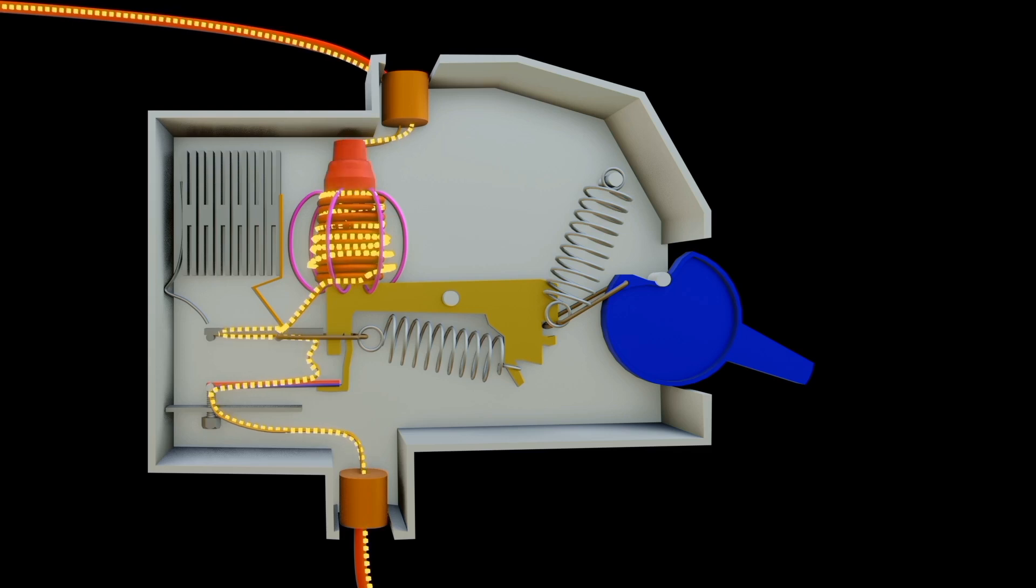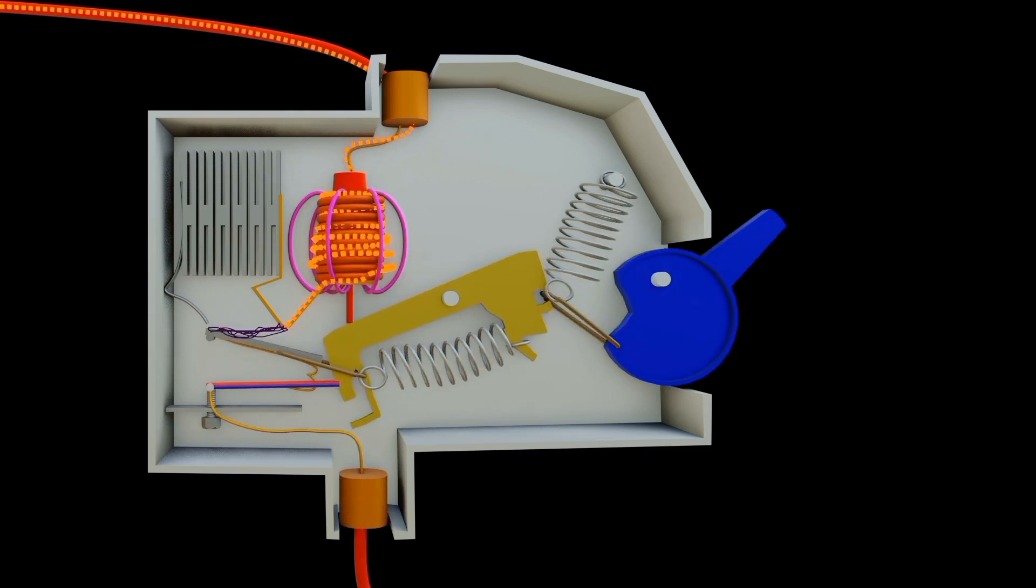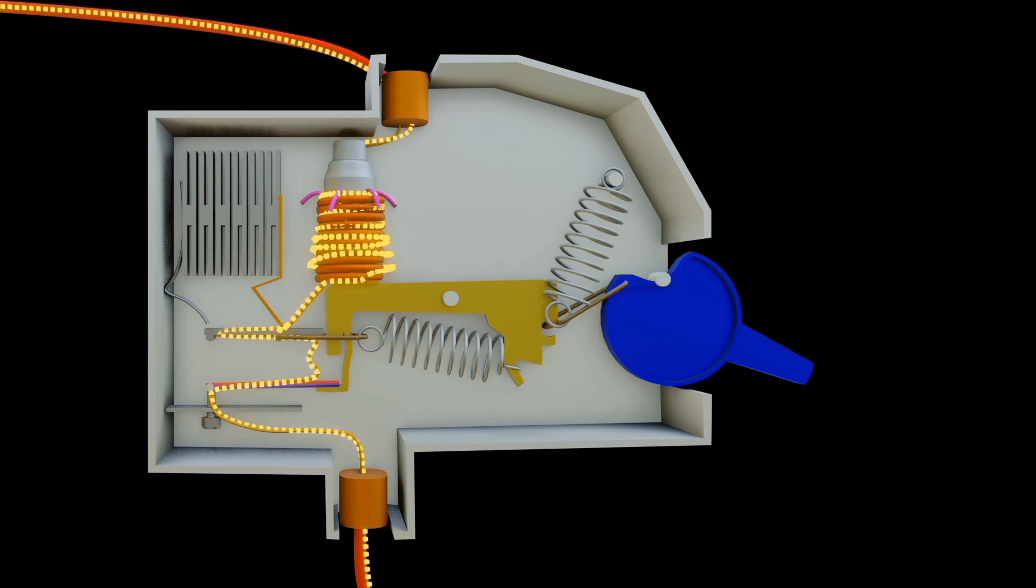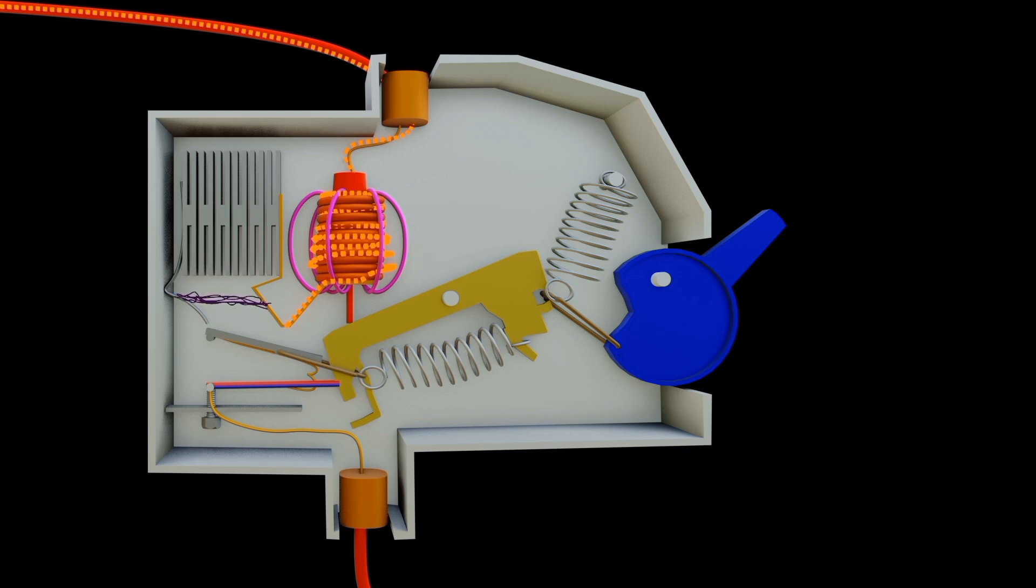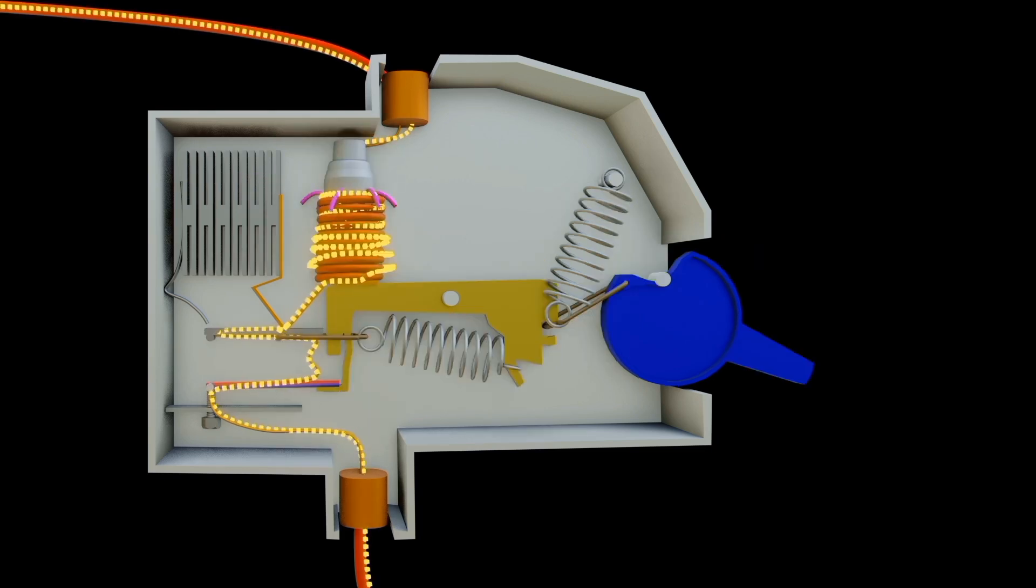Certain materials within the arc chamber are chosen for their ability to deionize the surrounding air. Deionization helps in reducing the conductivity of the arc, making it easier to extinguish. Metallic plates and grids contain materials like copper or tungsten. They have good thermal conductivity and can withstand the high temperature generated by the arc. Also ceramics or composite materials may be used since they have ability to withstand high temperature and insulating capacity.